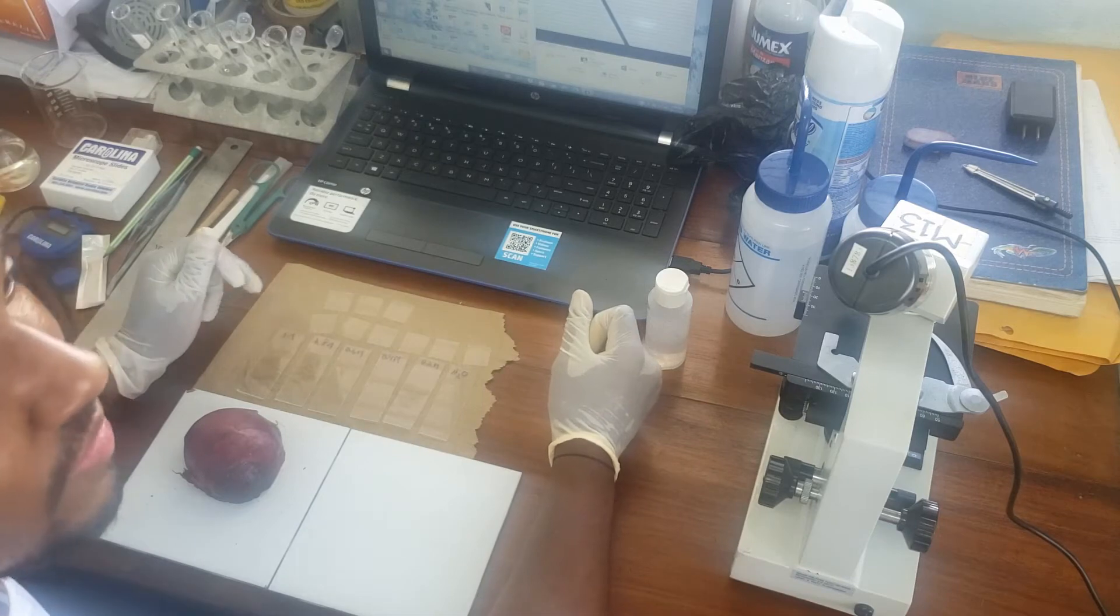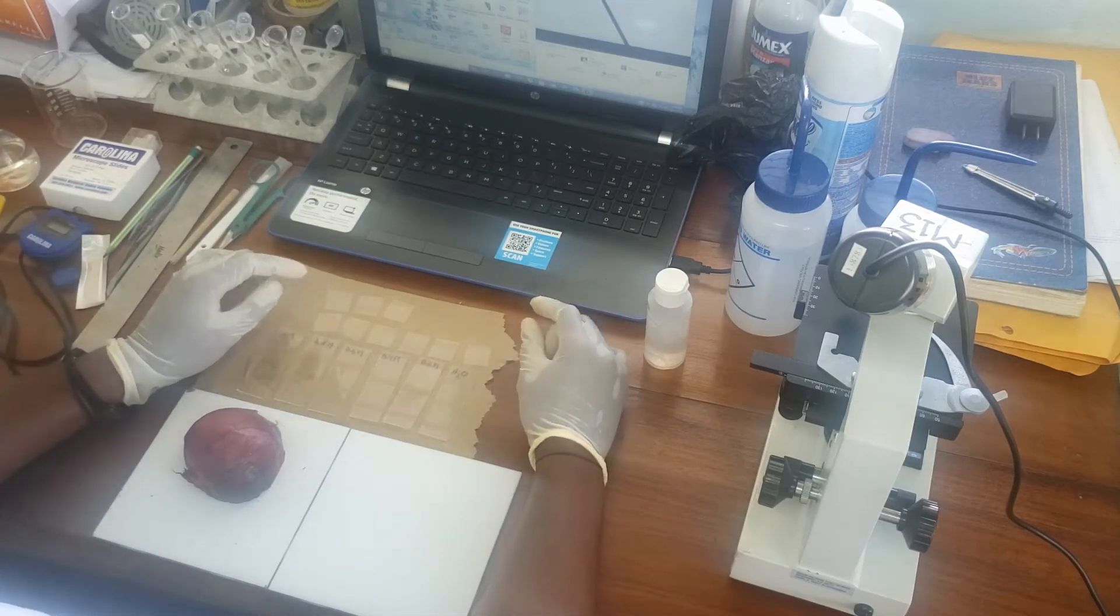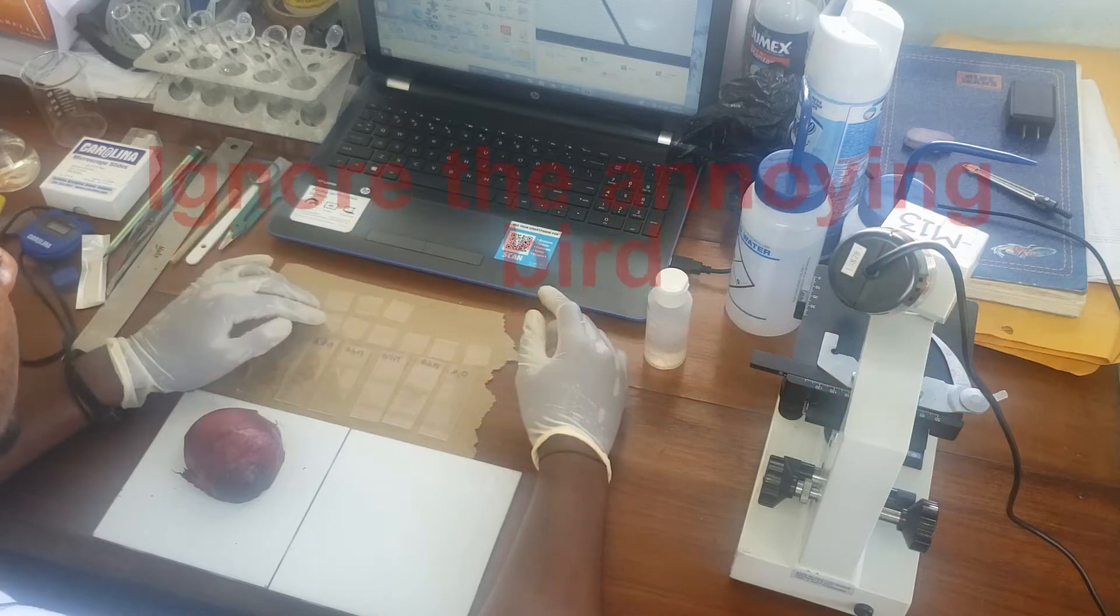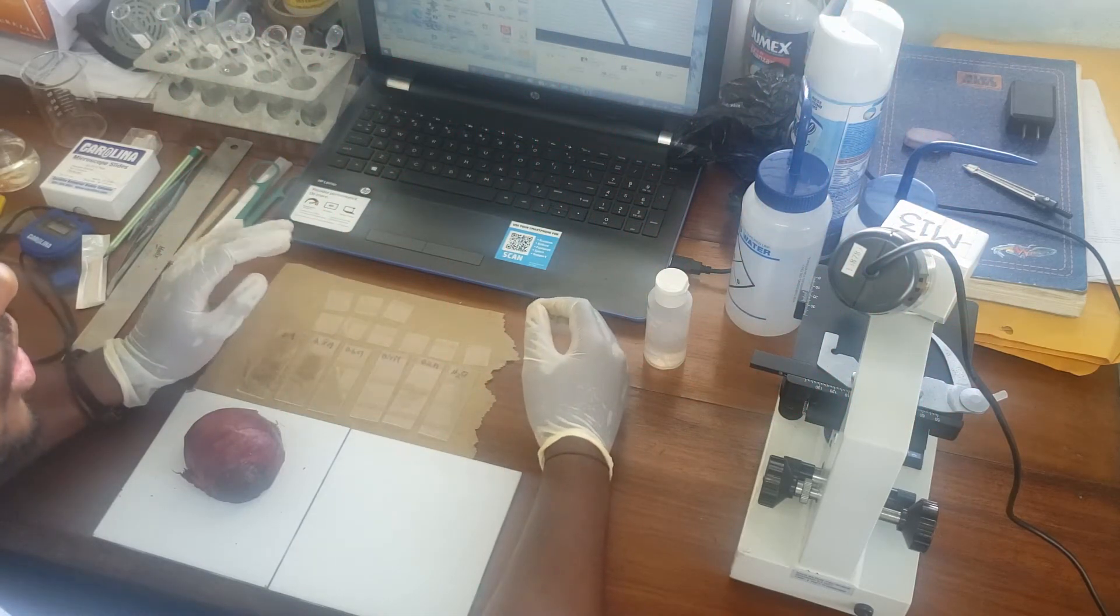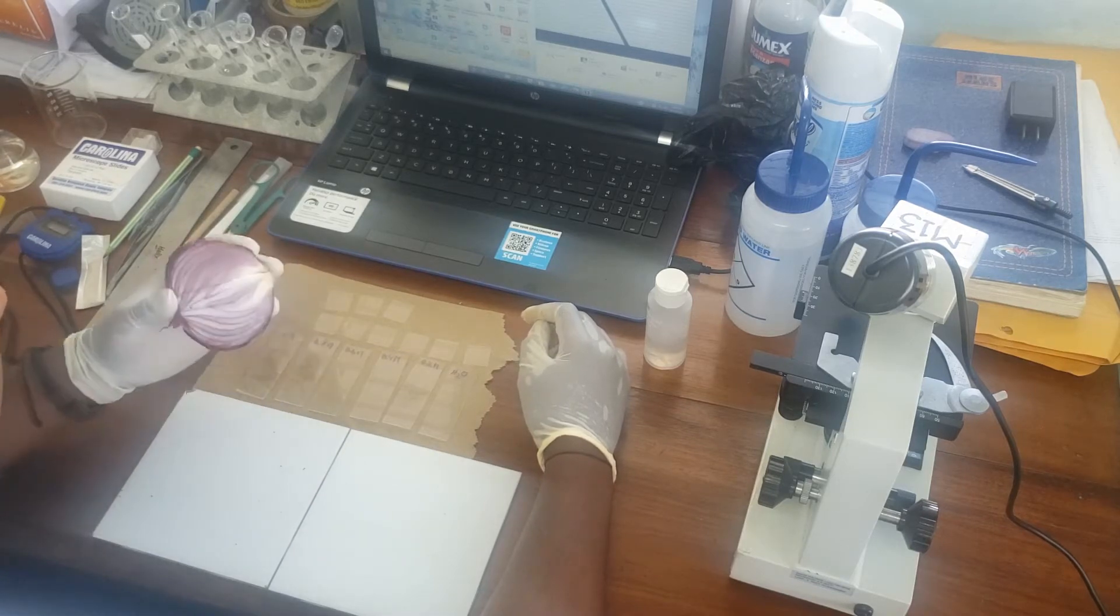Hello again, and today we'll be investigating plasmolysis of cells. So we're going to be testing how plasmolysis and different concentrations of a solution affect the cells of a red onion.